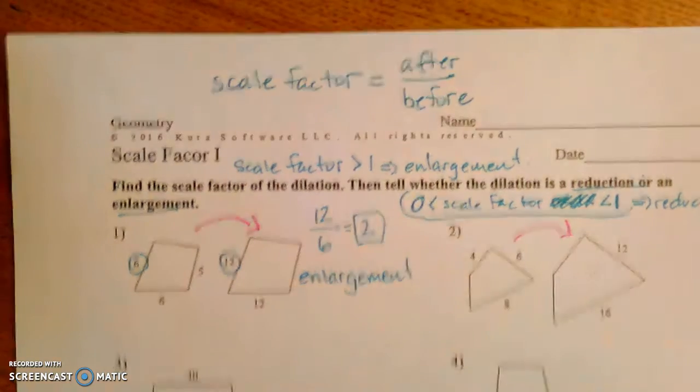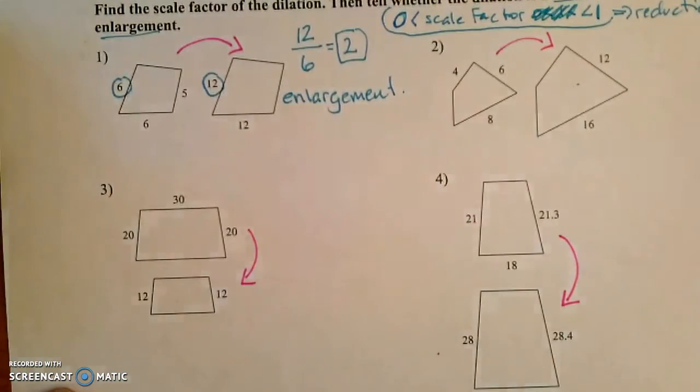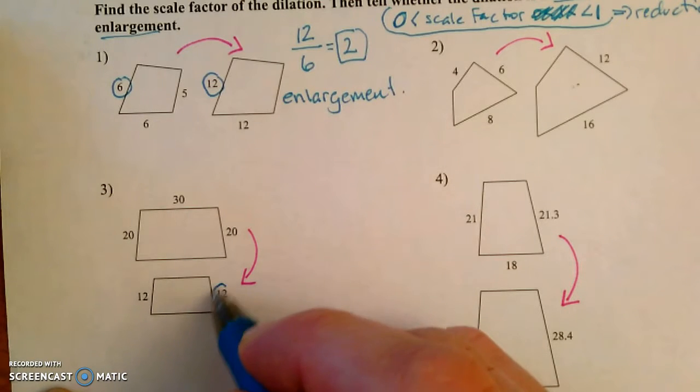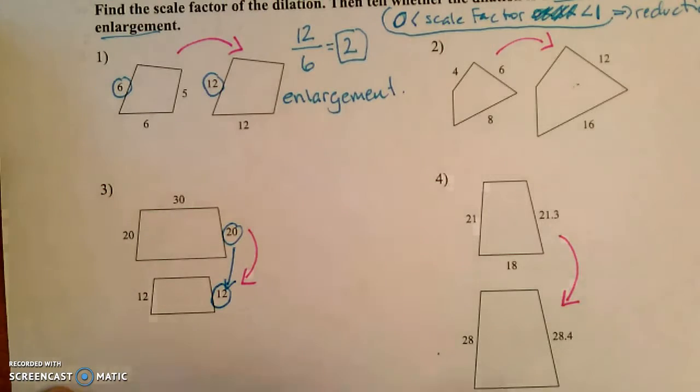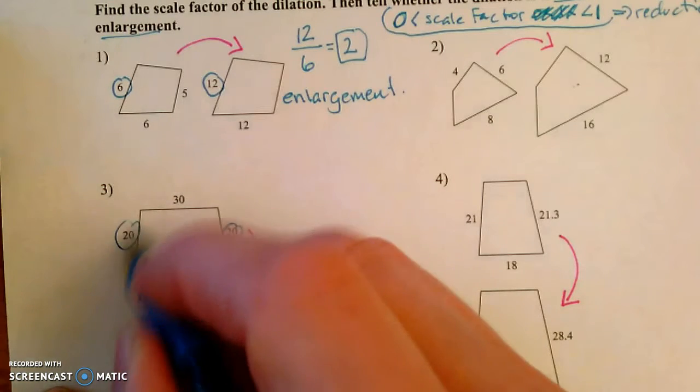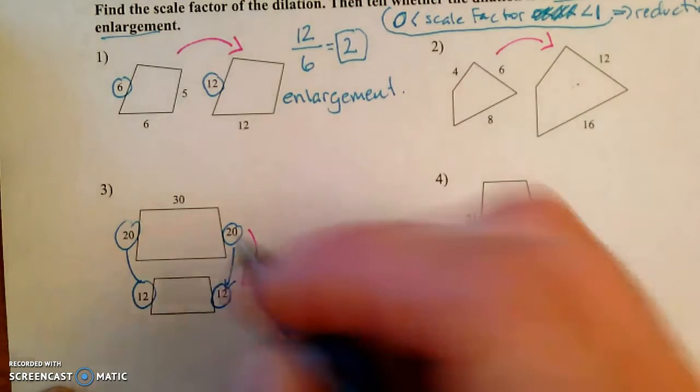Let's actually look at a reduction here before we move on. For example, here our after is 12 and our before is 20. You see here this 20 corresponds to this 12.